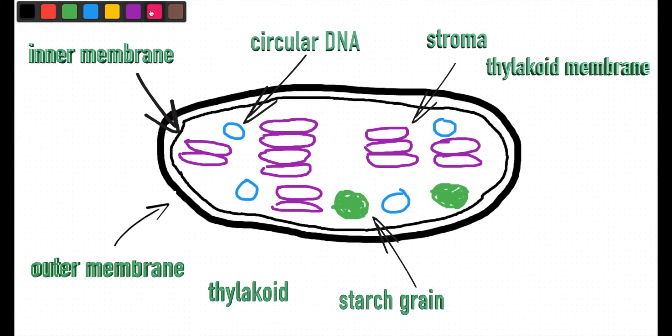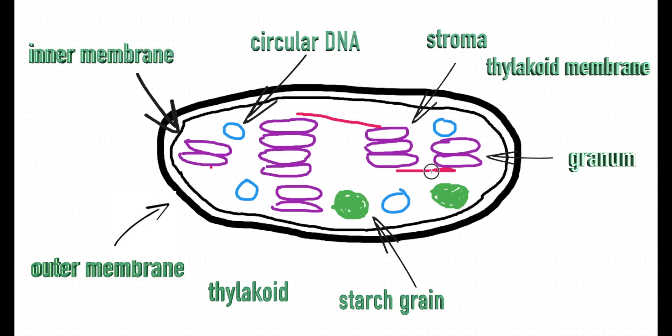A stack of thylakoids is known as a granum. Grana, the plural of granum, are linked together by bits of thylakoid membrane known as lamellae.